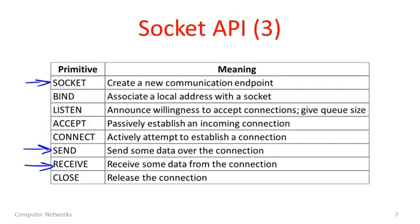All the other calls have to do with setting up and managing connections. Streams are analogous to a telephone call — before you can send information you need to set up a connection. The connect call is used by one side to establish a connection to another. The three calls above it — bind, listen, and accept — are used on the incoming side to get ready and accept an incoming connection. Finally, the close call releases a connection when both sides are finished.